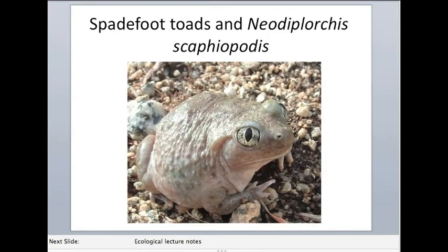And the final system that I'll talk about are spadefoot toads and the Neodiplorchis scaphiopodis parasites, so these are also monogeneans. And the difficulty of infecting spadefoot toads is that they live in Arizona in the deserts where there's very little water. So these toads will spend 10 months or so underground in the cool dirt to try to protect themselves from the outside environment. They can't live out there, and they will only reproduce for one to three nights during the time when there are big rains in the Arizona deserts and there are temporary pools produced.